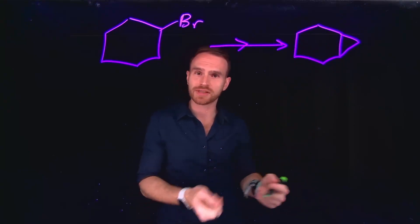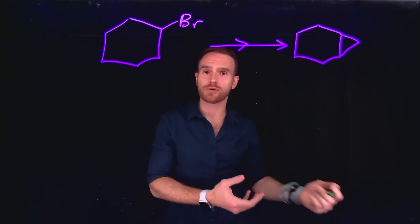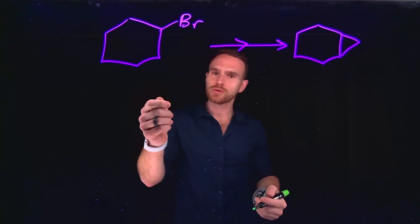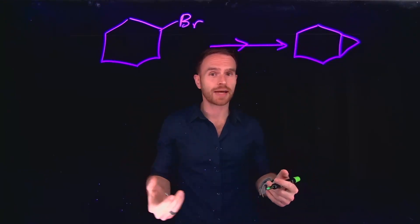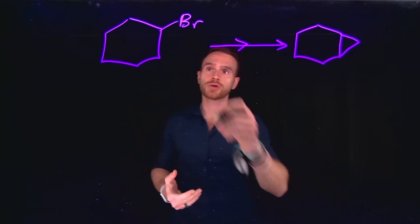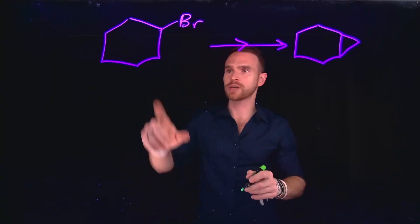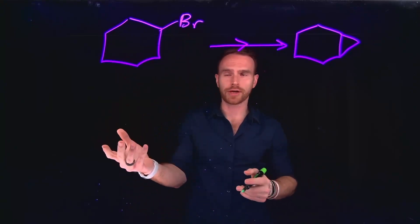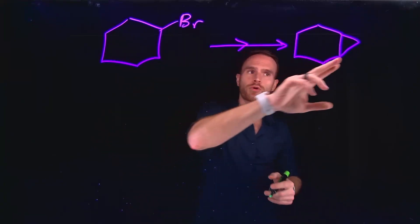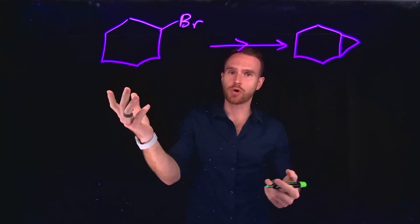And today, in this video, we learned about the Simmons-Smith reaction to form cyclopropyl rings using organozinc reagents. But in order to do so, those organozinc reagents have to add to things like an alkene. So for that reason, when we have our starting bromocyclohexane ring, I see that in order to form this new cyclopropane ring, I first need to eliminate this bromine.